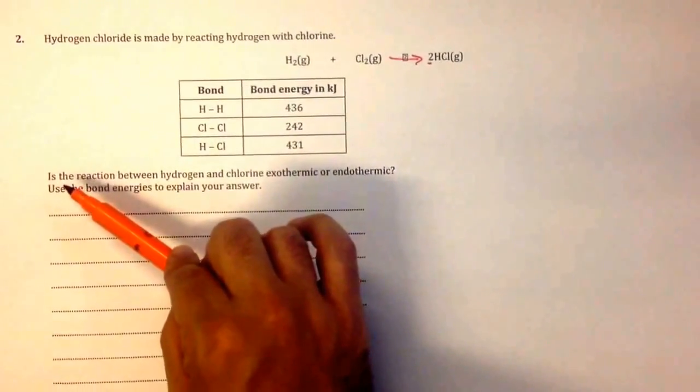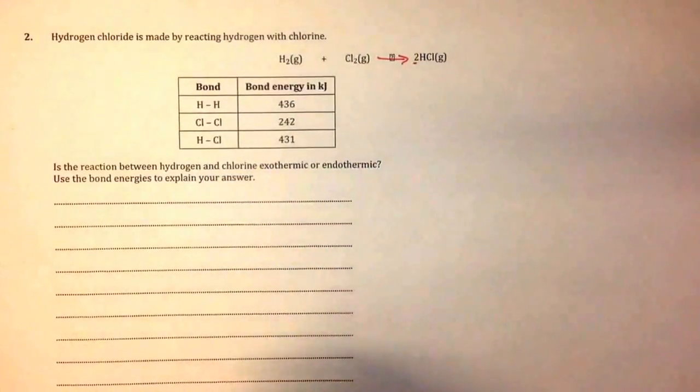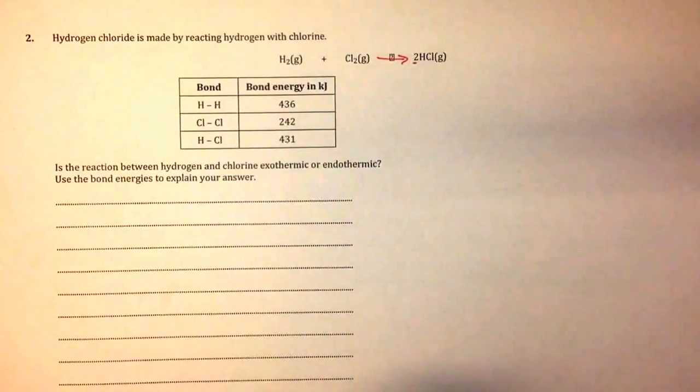The question asks: is the reaction between hydrogen and chlorine exothermic or endothermic? Use the bond energies to explain your answer.